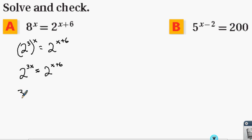So this now becomes 3x equals x plus 6. Let's subtract x from both sides of the equation. We get 2x equals 6, which means that x equals 3.